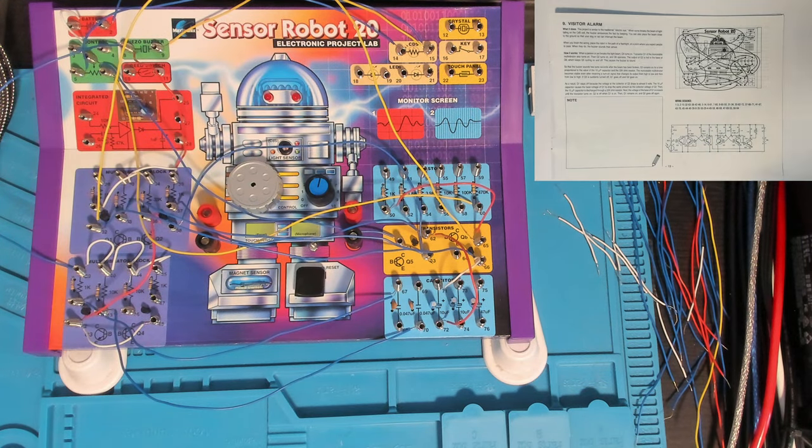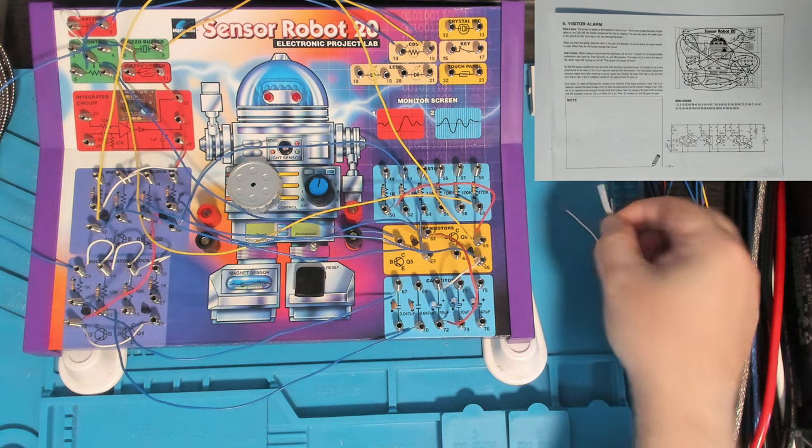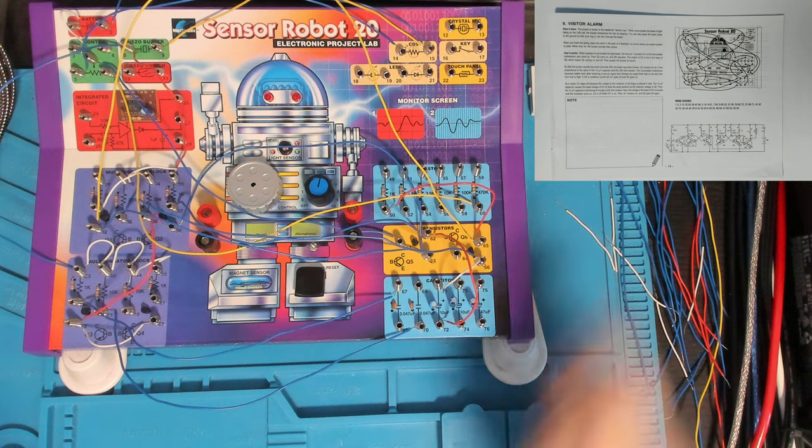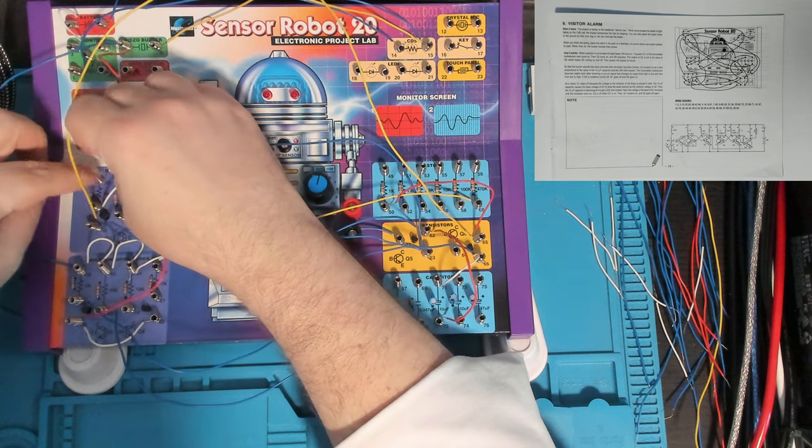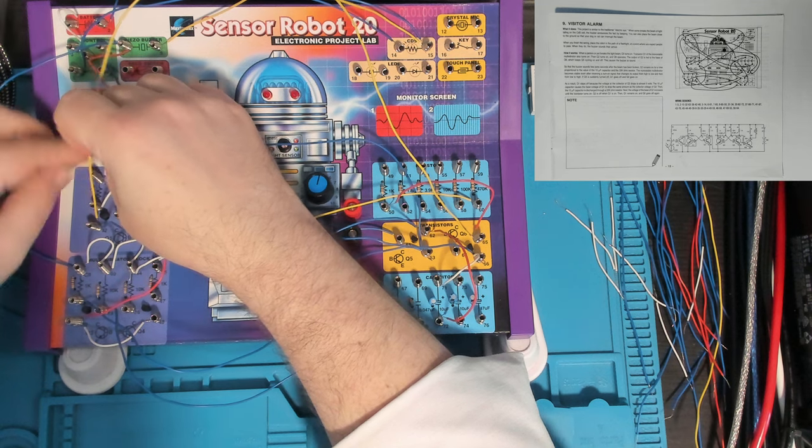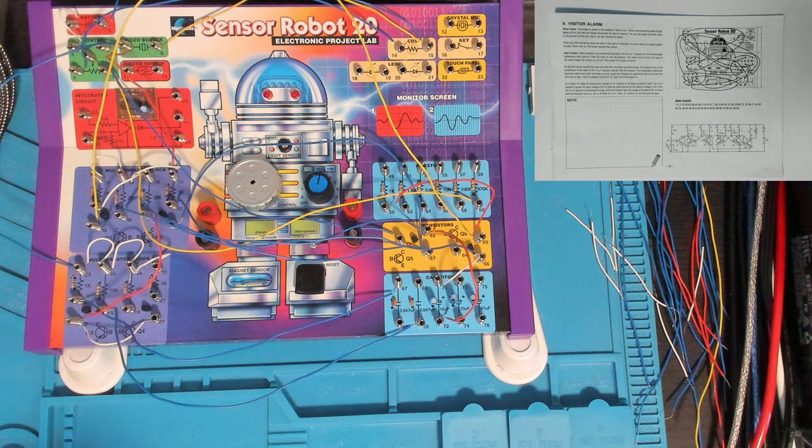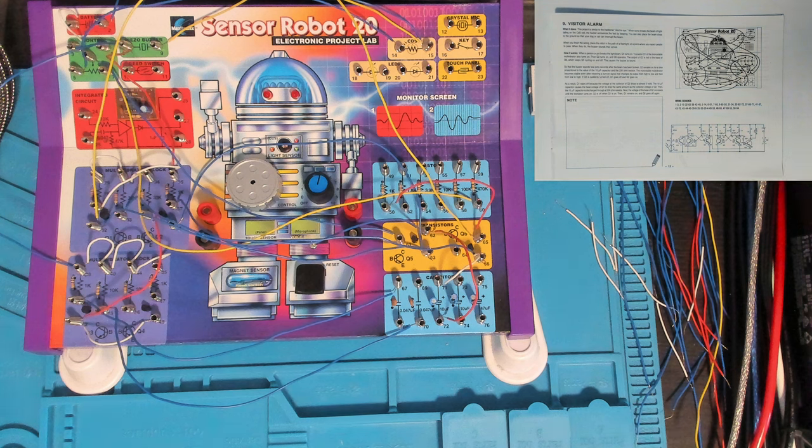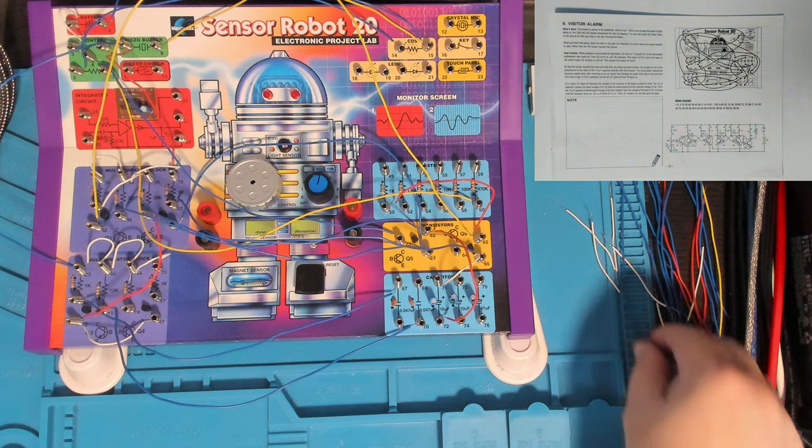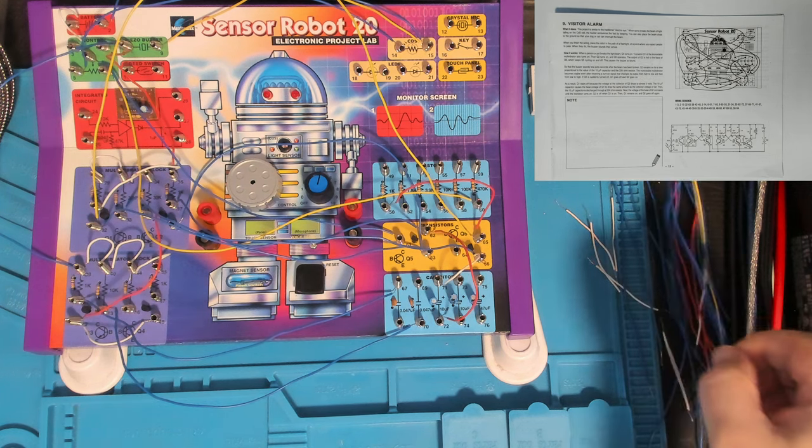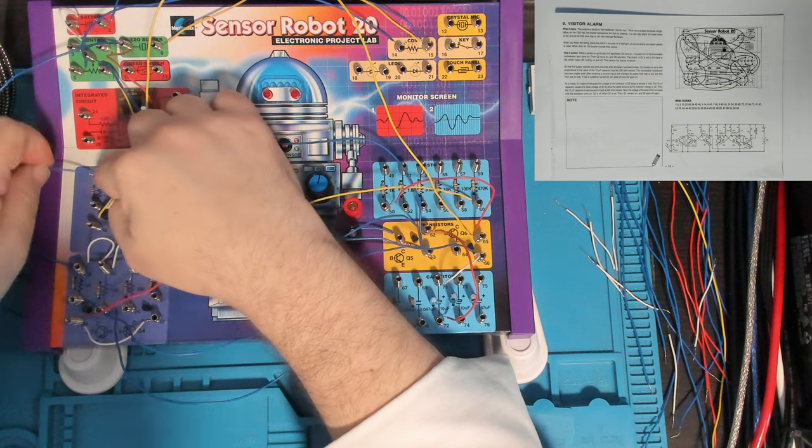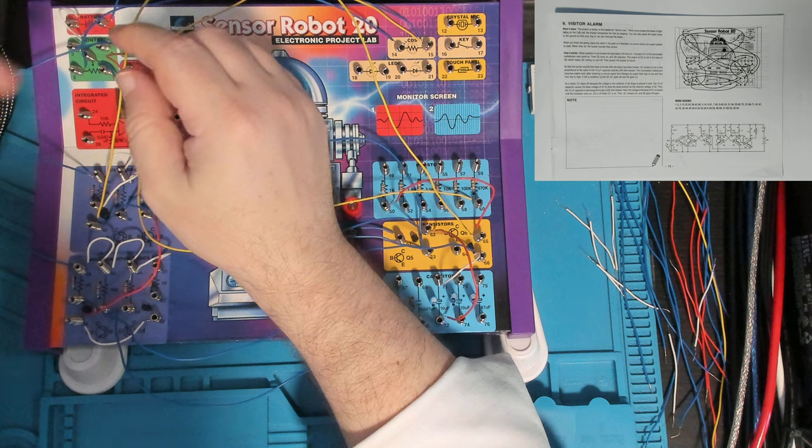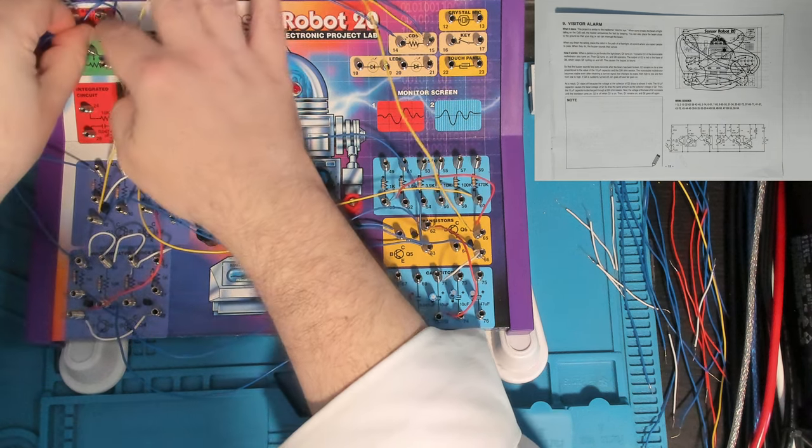And then 30 to 29. This is a similar connection that we saw in the other multivibrator block, just tying the bases and the collectors together through their resistors. And then 29 back to 4, the other side of our power switch. The resistor attached to the collector of Q1 over to one side of our power switch. I'll just turn that power switch off while I think about it.